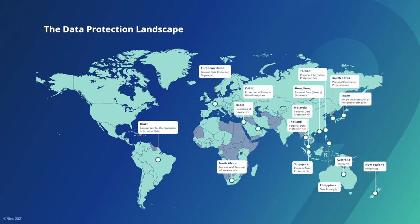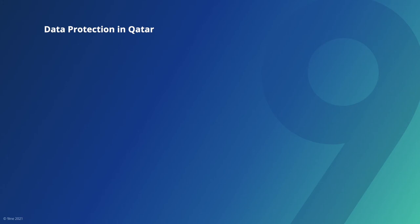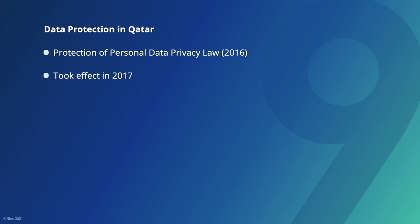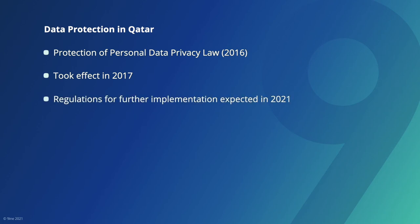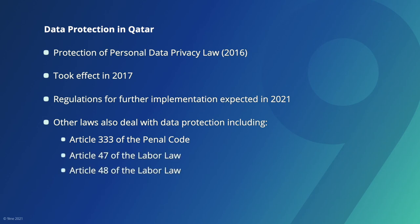The earliest data protection laws emerged in Europe in the latter half of the 20th century. From a slow start, the international legal landscape has changed dramatically, with new laws and regulations being drafted and enacted throughout the world. There are multiple laws in Qatar that deal with data privacy, the most notable of which is Law Number 13 of 2016 Concerning Personal Data Protection, or the Protection of Personal Data Privacy Law, which incorporates concepts from other international privacy frameworks. This took effect in 2017. Other aspects of Qatari law that deal with data protection include Article 333 of the Penal Code and Articles 47 and 48 of the Labour Law, so the importance of data protection should not be underestimated.